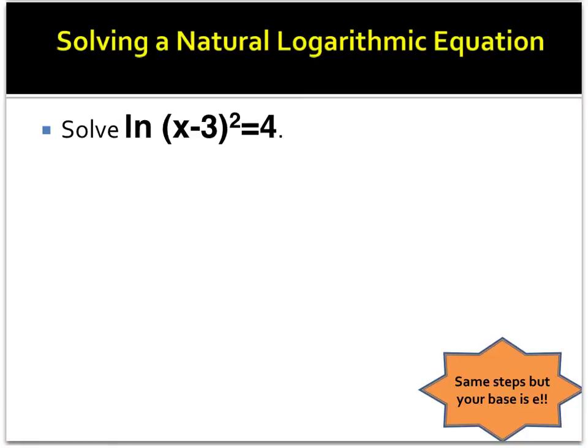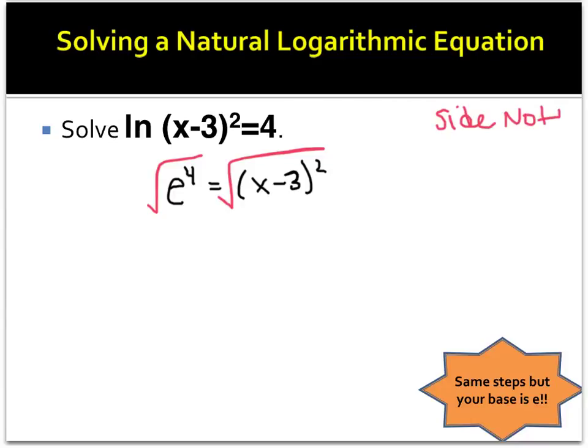Now we are going to treat this just like we did the last logarithmic equation, except for now since it's natural log, my base is e. So since I only have one logarithmic expression, I just switch to exponent form. So the base here is e, so this would be e^4 = (x - 3)^2. Now we are going to solve for x by taking the square root of each side. Now the square root, this is a little side note, e^4 is the same thing as saying (e^2)^2.